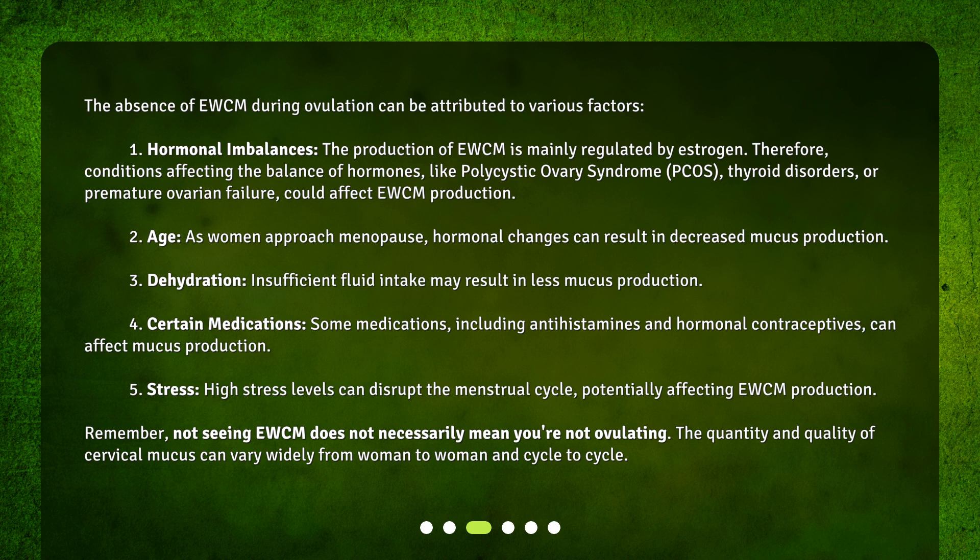Four: certain medications. Some medications, including antihistamines and hormonal contraceptives, can affect mucus production. Five: stress. High stress levels can disrupt the menstrual cycle, potentially affecting EWCM production. Remember, not seeing EWCM does not necessarily mean you're not ovulating — the quantity and quality of cervical mucus can vary widely from woman to woman and cycle to cycle.